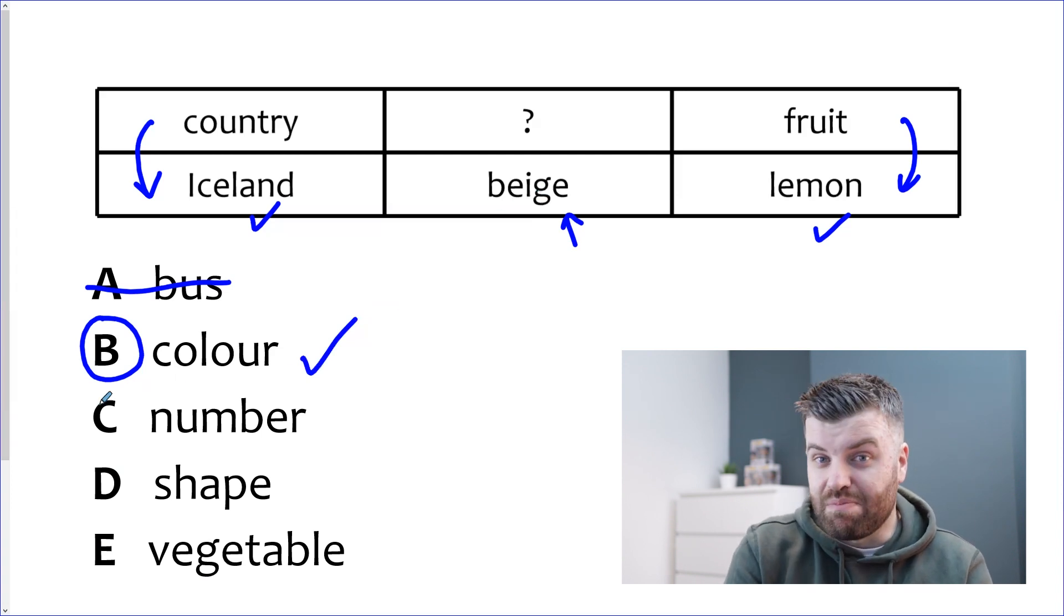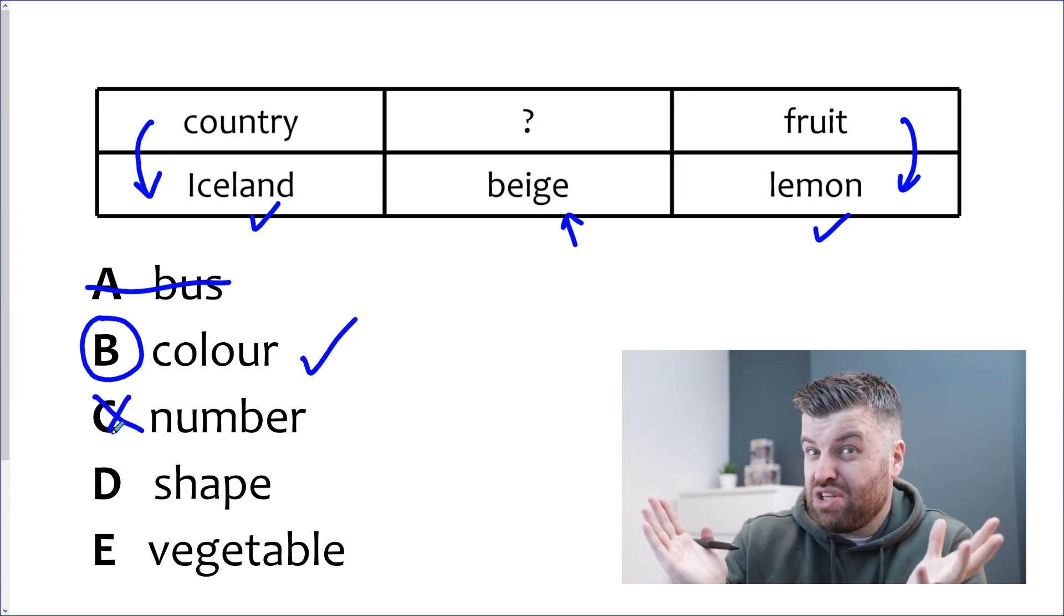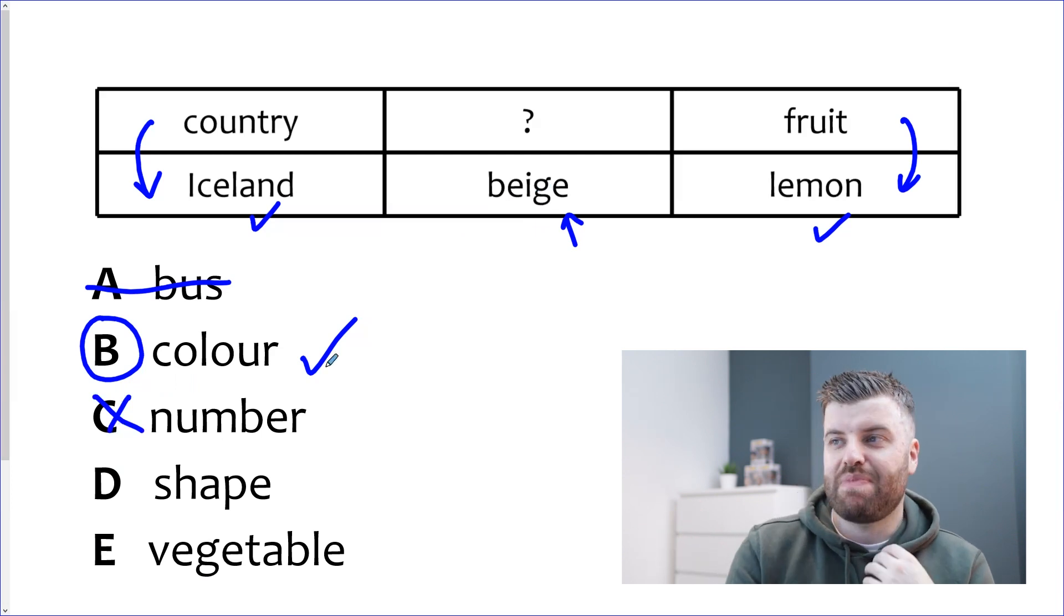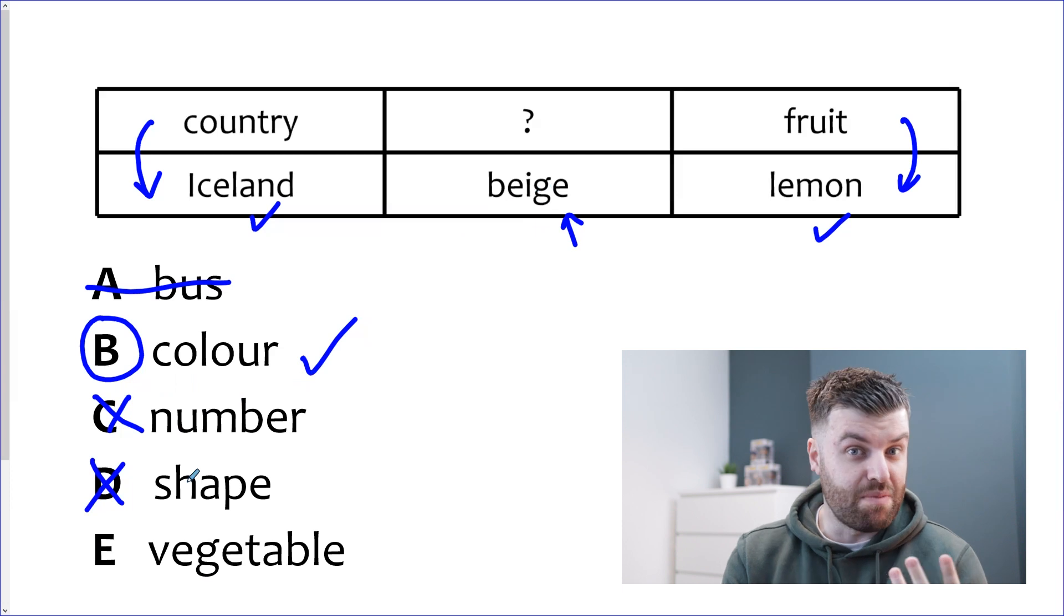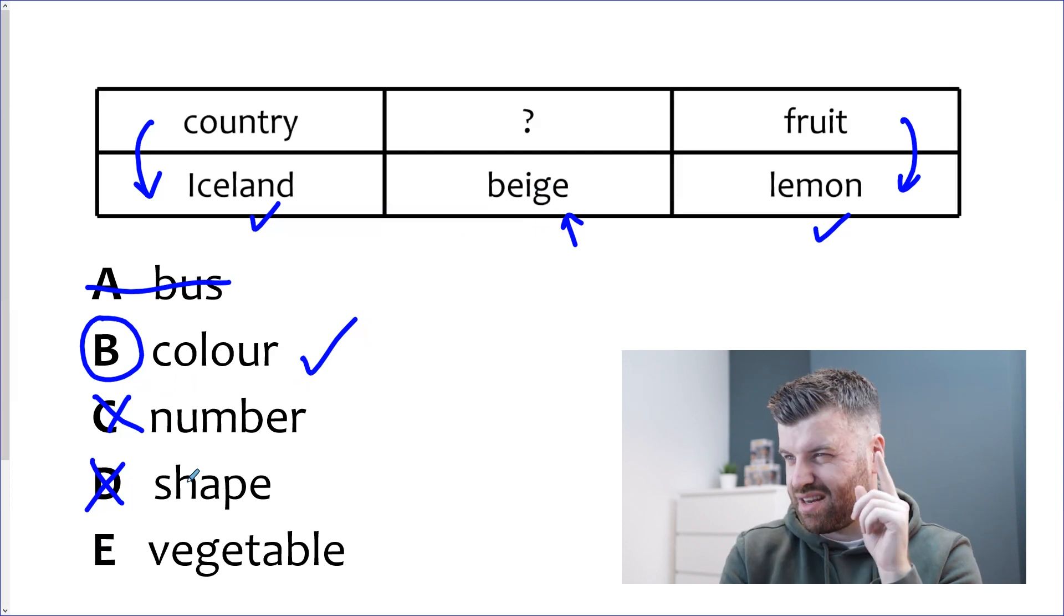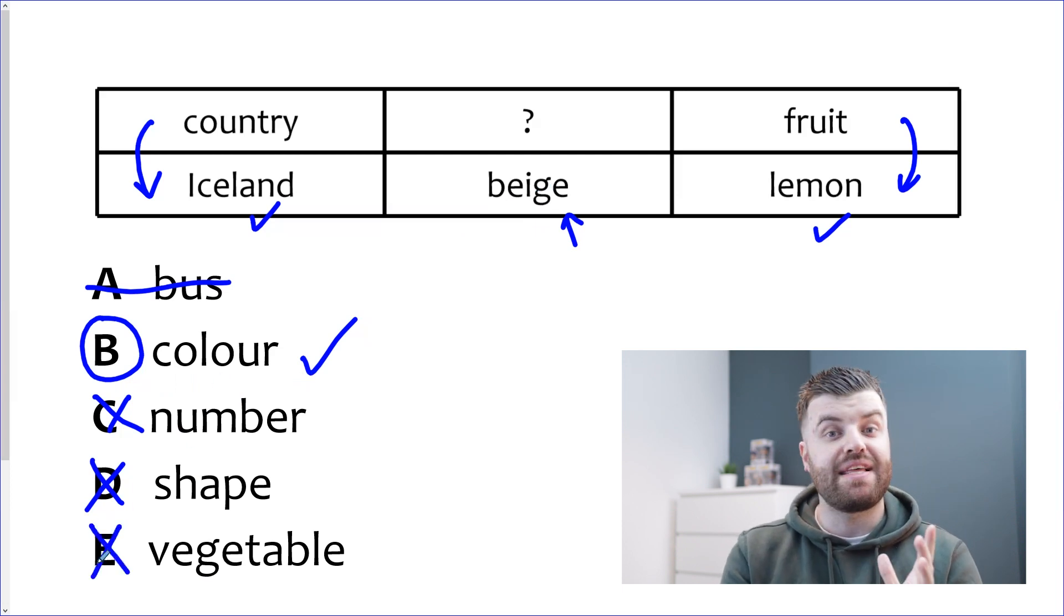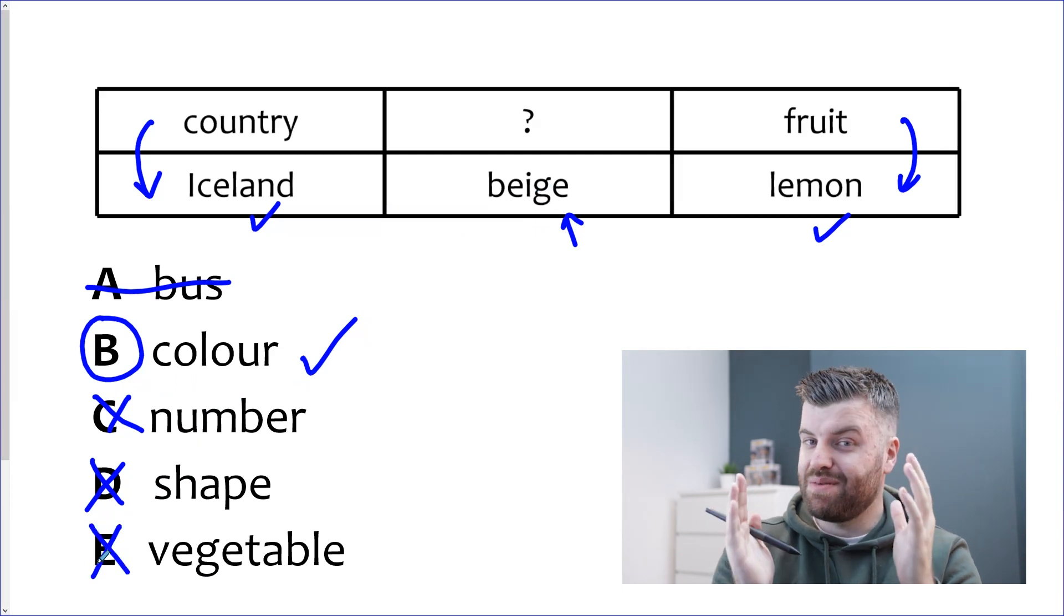Is beige a type of number? No. One, two, three, beige, five. No. Doesn't work. Is beige a type of shape? No. Is beige a type of vegetable? Well you might get beige vegetables but it's certainly not a type of vegetable. Doesn't fit the category. The answer is B.